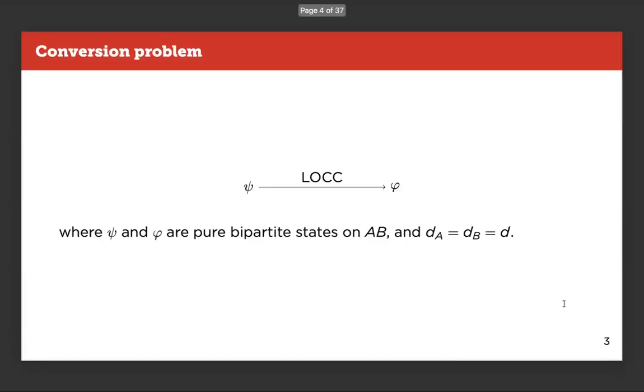So, to start, we do a small step back and we talk about the conversion problem just to set up the stage. So, one interesting question in LOCC, but in general in any resource theories, is if it is possible to convert a bipartite state ψ into another bipartite state φ using only LOCC operations. In this presentation, we will always assume that both states are bipartite states on AB and the dimensions of AB are the same. This can be done without loss of generality.